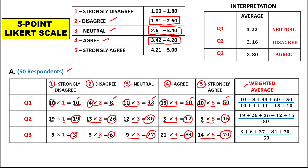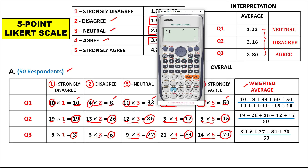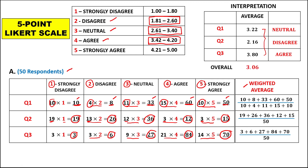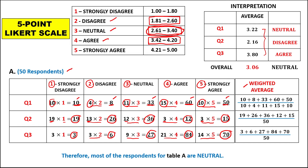To find the overall average, add all the question averages: 3.22 plus 2.16 plus 3.80, then divide by 3. That equals 3.06. The overall average of 3.06 belongs to the neutral range, so for Table A overall, most of the respondents are neutral.